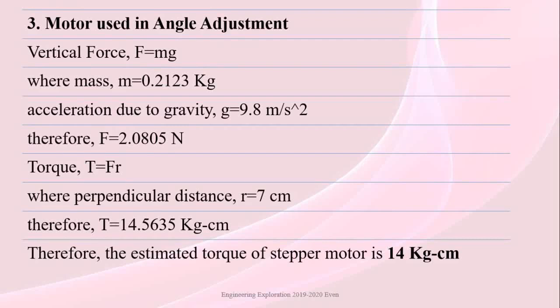For the motor used in angle adjustment, force acts vertically: F = mg where M = 0.2123 kg and G = 9.8 m/s², giving F = 2.0805 N. Torque T = FR where perpendicular distance R = 7 cm, giving T = 14.5635 kg·cm. Therefore the estimated torque of the stepper motor is 14 kg·cm.